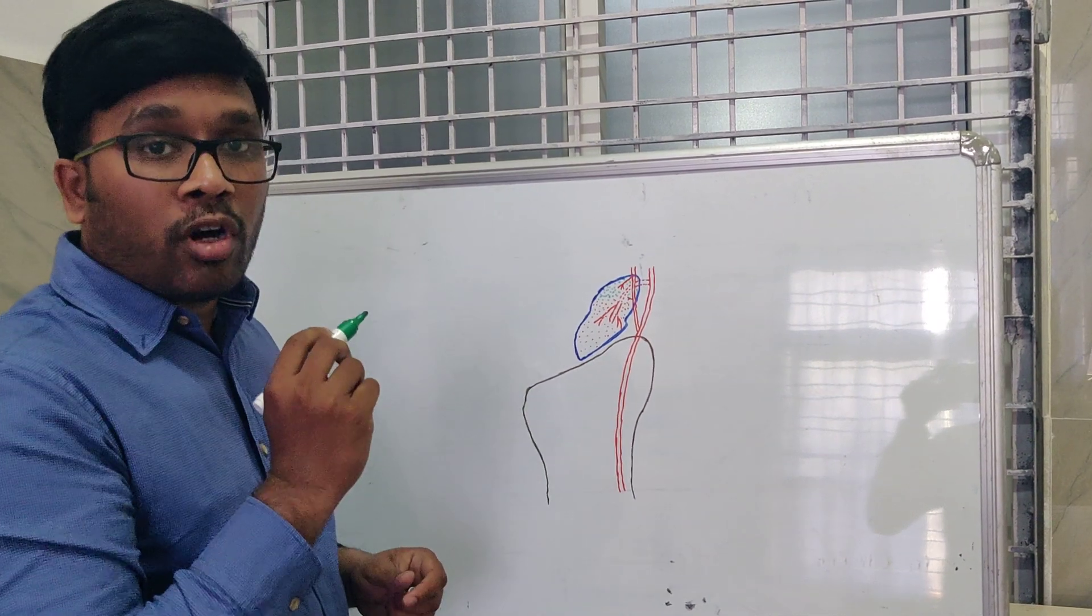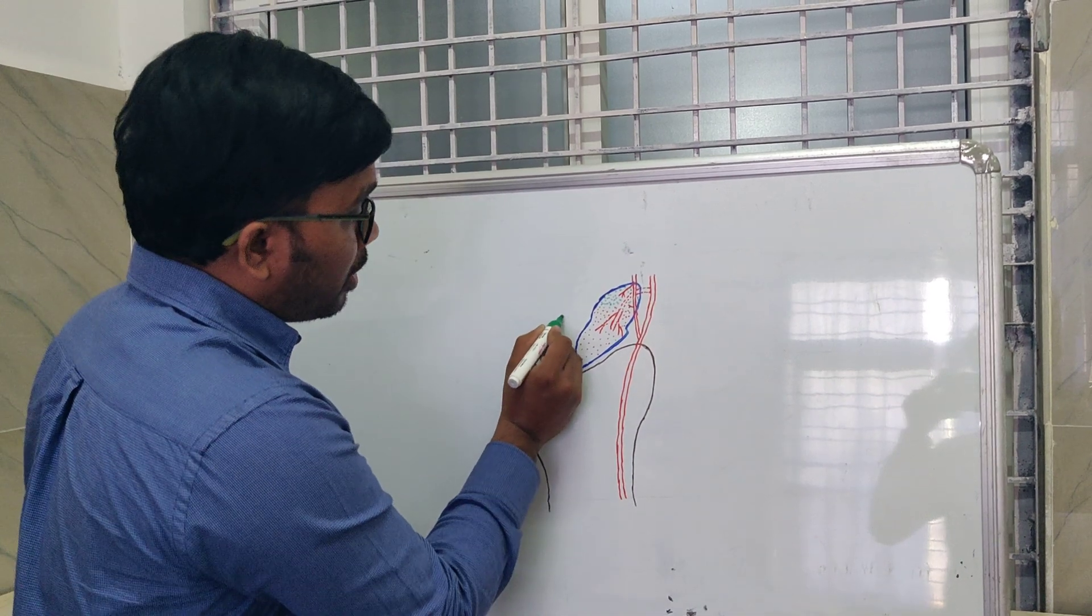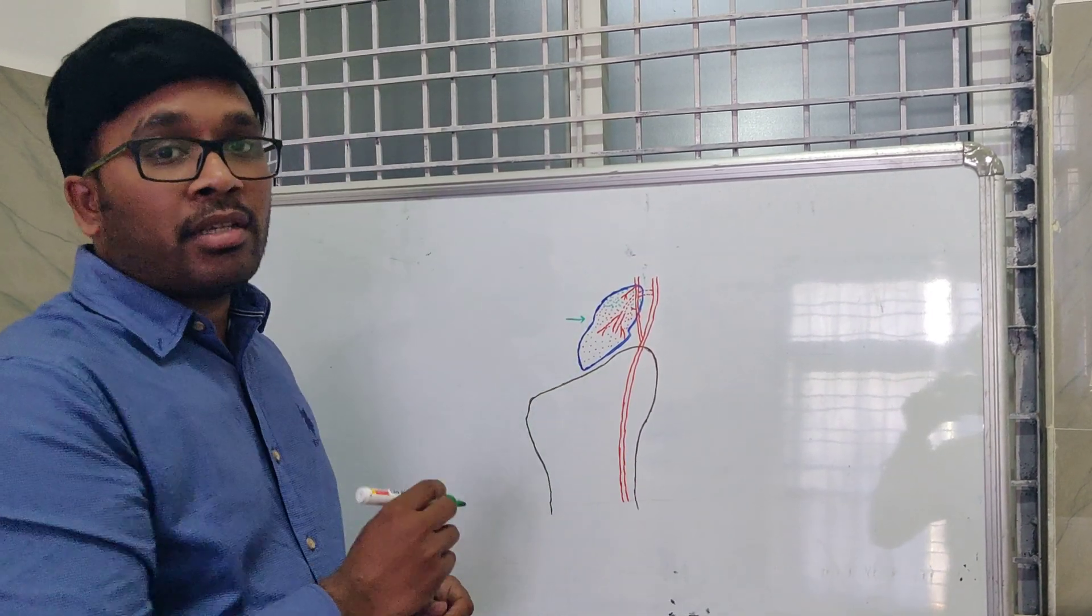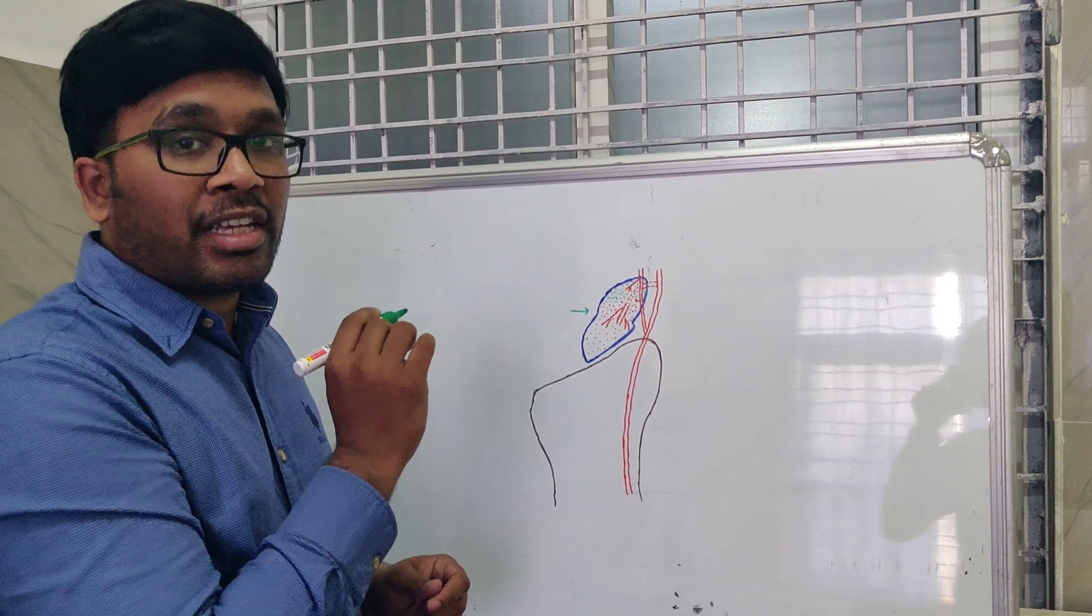The most common fracture of the scaphoid is a fracture at the waist, at this place. This fracture has a moderate risk of avascular necrosis.